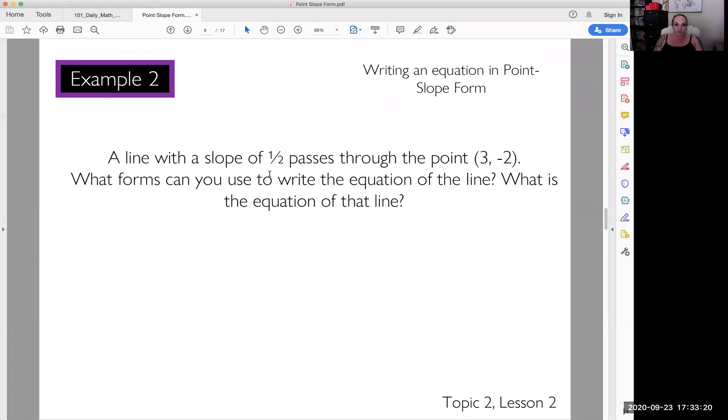So we have a line with a slope of 1 half passing through the point 3 and negative 2. What forms can you use to write the equation of that line? What is the equation of that line?